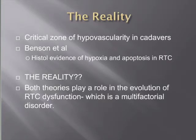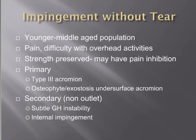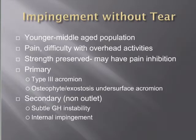Impingement without a tear is generally seen in a younger to middle-aged population. Presentation is predominantly one of pain, with difficulty in overhead activities related to pain inhibition. Strength should be well preserved, though there may be some pseudo-weakness due to pain inhibition. It can be primary, related to a subacromial etiology such as a Type 3 acromion, osteophytes or exostosis on the undersurface of the acromion, or a narrow subacromial or coracoacromial arch.